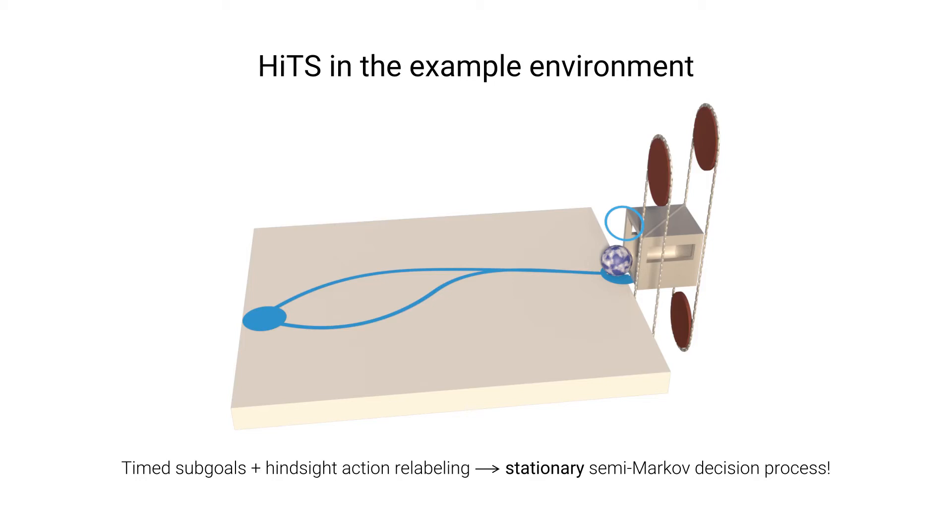In the paper we prove that, under some assumptions about the environment, using timed subgoals in conjunction with hindsight action relabeling results in transitions that correspond to a completely stationary semi-Markov decision process. While HITS deviates slightly from its idealized setting, for example by using testing transitions,